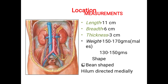The kidney measures approximately 11 cm in length, 6 cm in breadth, and 3 cm in thickness. Weight in males is about 150–170 g and in females 130–150 g. The shape is bean-shaped and the hilum is directed medially.